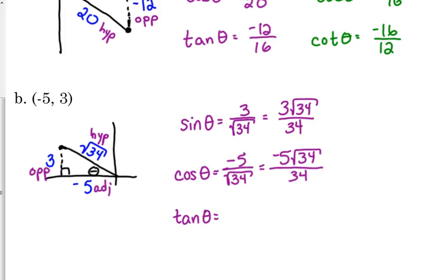Tangent, opposite over adjacent. And again, we don't want that negative in the denominator. So even though the 5 is technically the negative number, we put the negative with the 3 in the numerator.